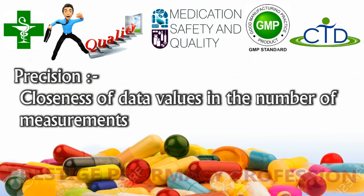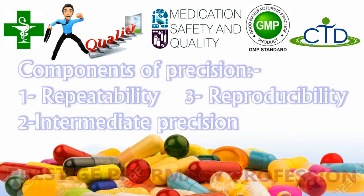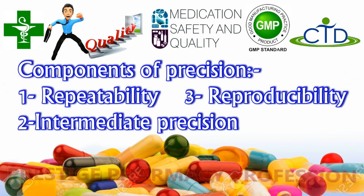The next characteristic of validation after accuracy is precision. Analytical method precision confirms the consistency and uniformity of the analytical method in different situations and environments. The components of precision mentioned on screen are key toward achieving validation of the analytical method, because these three components ensure the accuracy of the method from the very start of method development through its application in different laboratories.